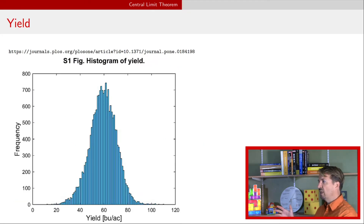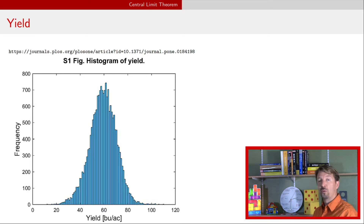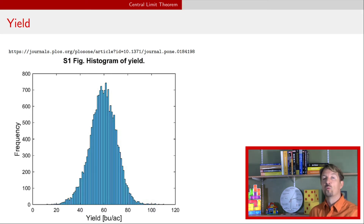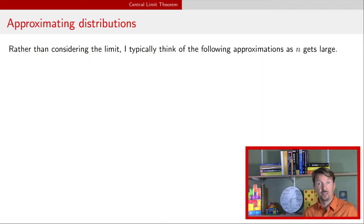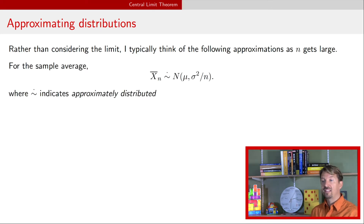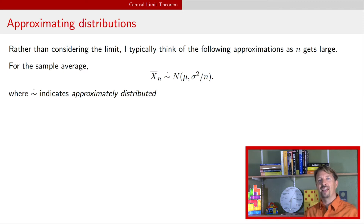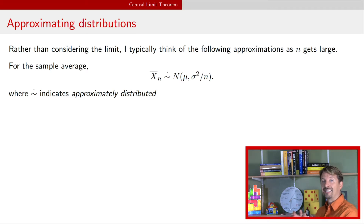What I think about is looking at a histogram like this histogram of yield and saying it looks like a bell-shaped curve — that is, it looks like the probability density function for a normal random variable. I want to know what would be the mean and standard deviation or variance for that normal random variable. That's the way I think about using the central limit theorem: how do I approximate this distribution when n is large? When n is large, we can say that the sample mean has an approximate normal distribution. My notation for approximate distribution is the tilde with a little dot above it. So there's an approximate normal distribution with expectation mu and variance sigma squared divided by n.